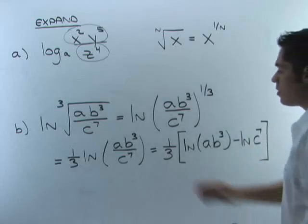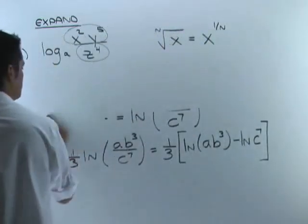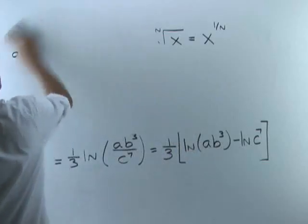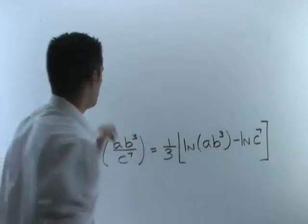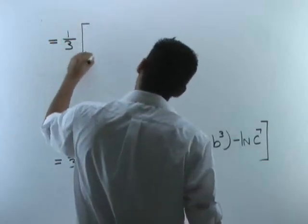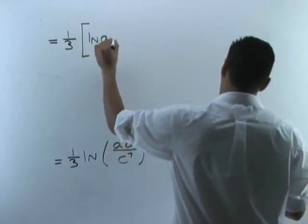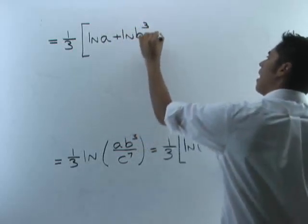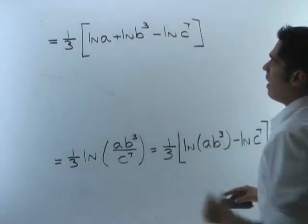Okay, see how that works? This becomes two logs, subtraction. Now what I'll do is take the multiplication that we have in that first log. I'm going to break that into two logs and make it addition. So I have one-third still out here. Bracket. I have natural log of a plus natural log of b cubed. And then I have minus natural log of c to the seventh. And then all of that's inside the bracket.